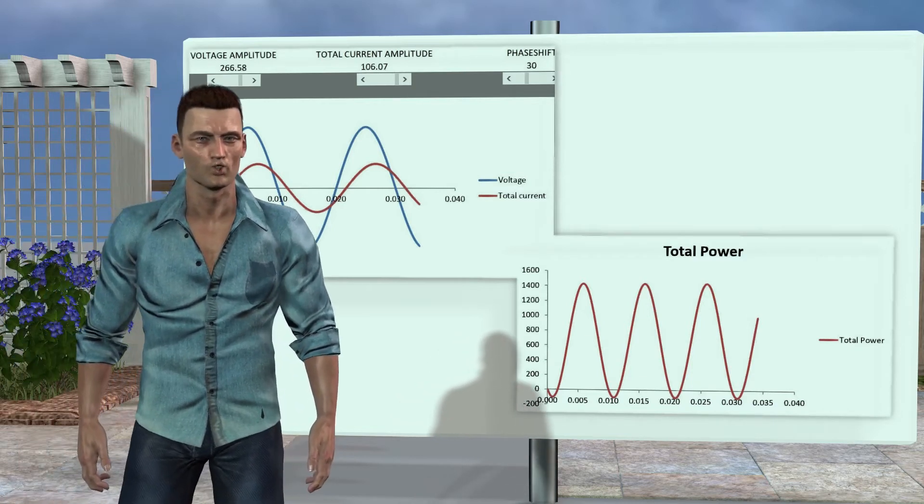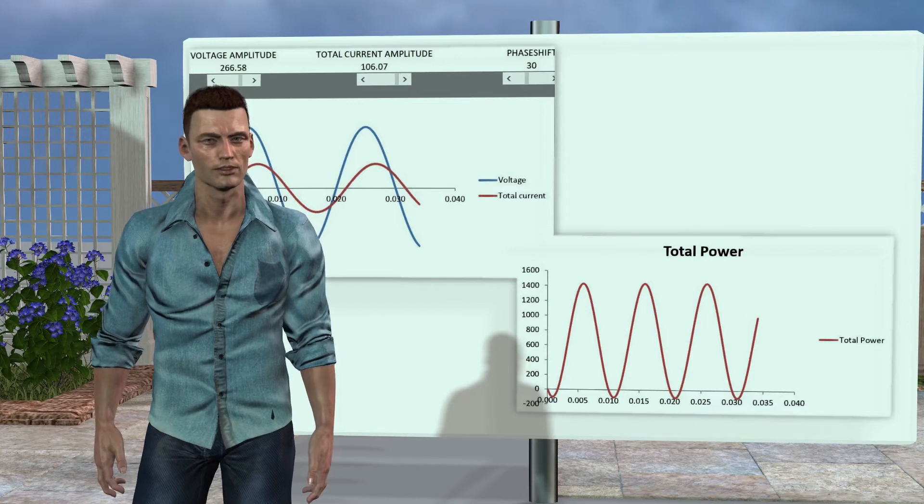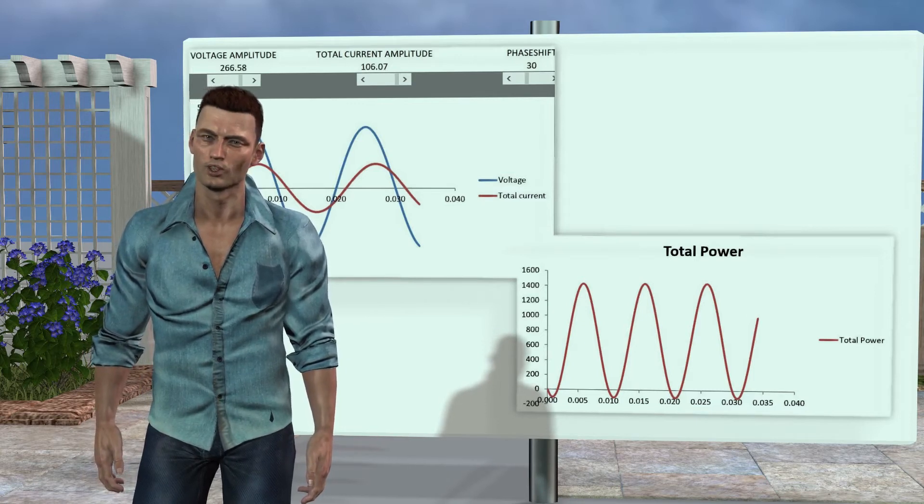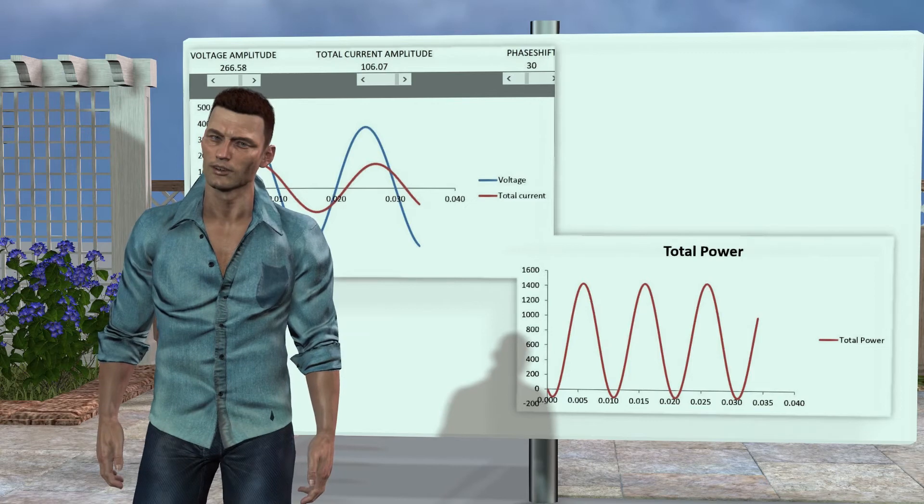but its average value will be positive, that is, energy is consumed and is transformed into work, in this case the resistance will dissipate heat, and for example, in a motor it will be generated some movement.